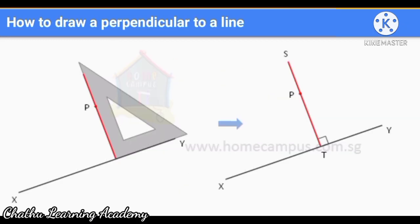Now we will see how to draw a perpendicular to a given line. Here XY is the given line and you need to draw a perpendicular from the point P. Then you should keep your set square like this. Then after that you can draw a line from P to XY. Then PT is the perpendicular to XY.